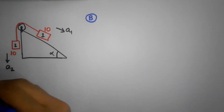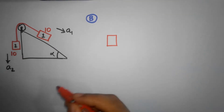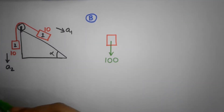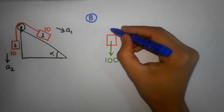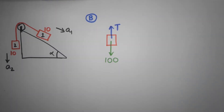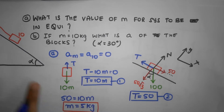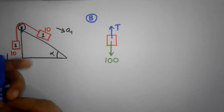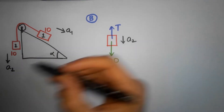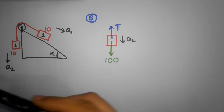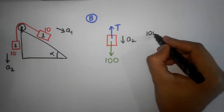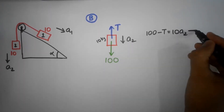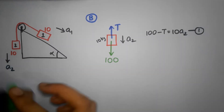Let's start with the hanging block. Forces acting on it: 100 newtons downwards and tension T upwards. Note that tension will be different now since the system is accelerating. Taking downwards as positive and applying Newton's second law: 100 minus T equals 10 times a2. That's equation number one.